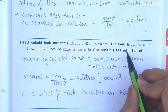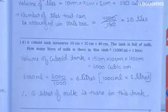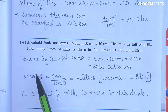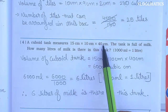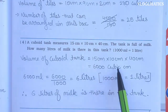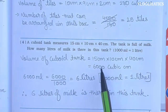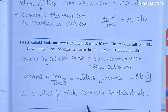We need to find how many liters of milk is in the tank. We find the volume of the cuboid, because space occupied by a shape is its volume. Volume of cuboid tank = 15 cm × 10 cm × 40 cm = 6000 cubic cm. This means the tank's volume is 6000 cubic cm, so we can fill 6000 ml of milk.